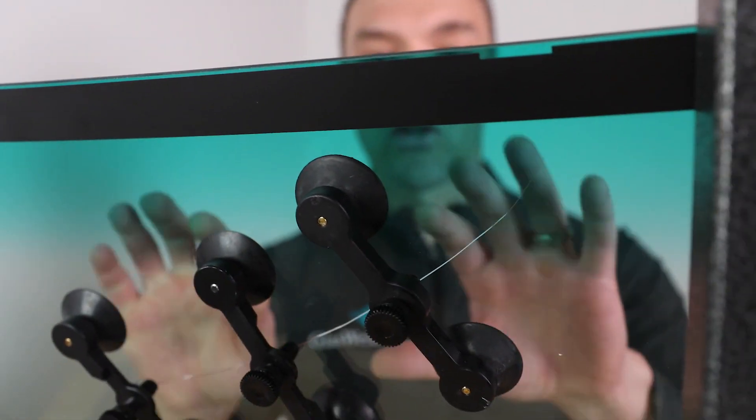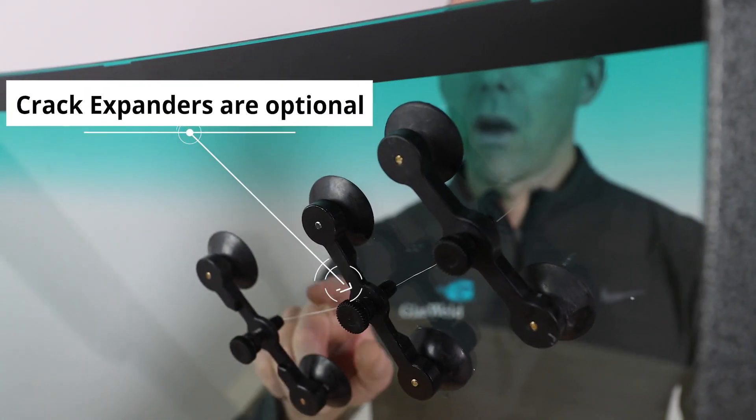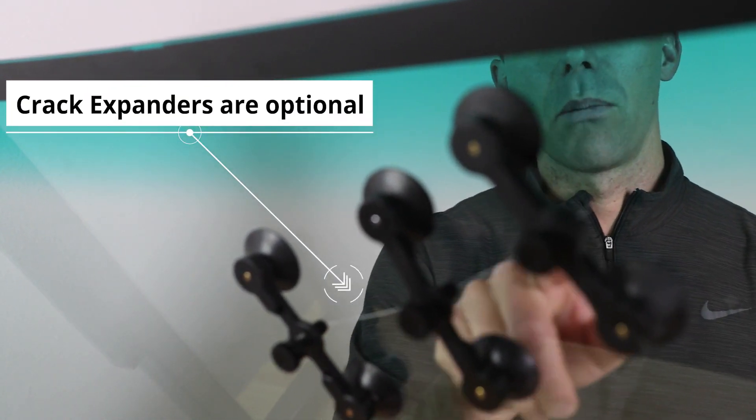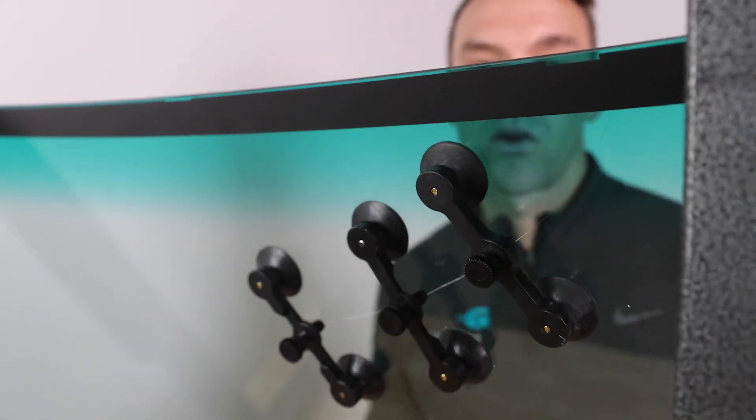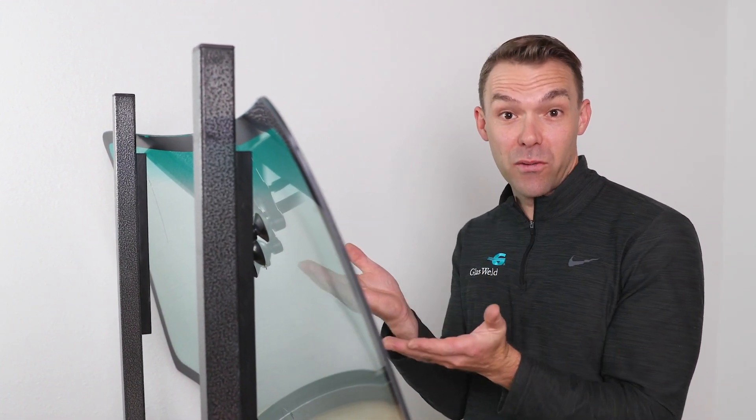So we've already got our crack expanders set up on the glass. We've got one set up close to the break and then a couple other sort of evenly placed between there and the end of the crack. Just to remind you, the reason we use crack expanders is that it stabilizes the crack in an open state so it can receive the resin, and also long cracks because they're surface, they tend to have this sort of cantilever effect that happens as you fill them.